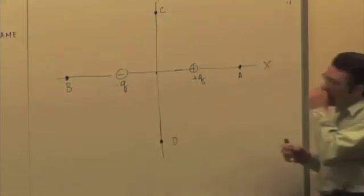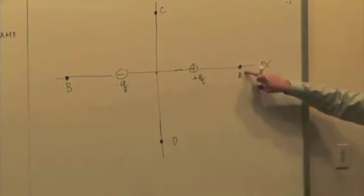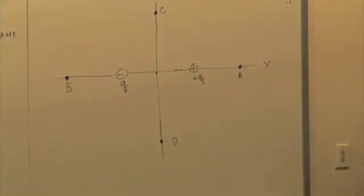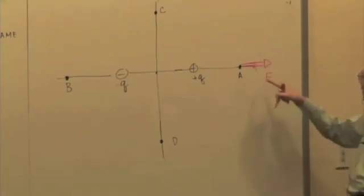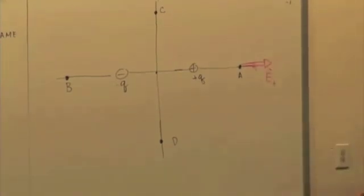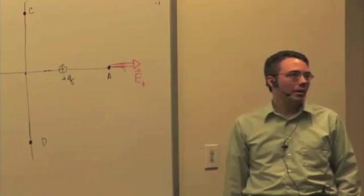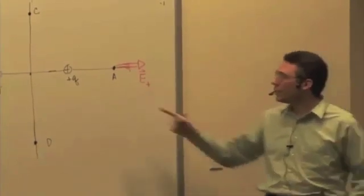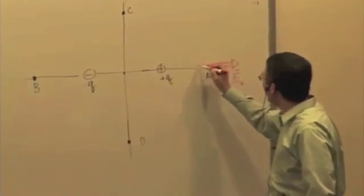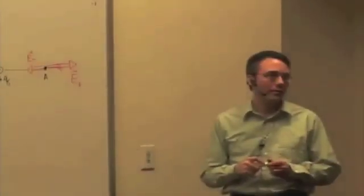So location A. I ignore the negative charge for right now and just think about the direction of the field due to the positive charge. That's pointing to the right. I'll call that E sub plus to indicate the electric field due to the positive charge. What about the field due to the negative charge? That's pointing the opposite direction. How do the magnitudes compare? E plus is bigger because it's closer. The positive charge is closer, so the field due to the negative charge farther away is smaller. When I add those two together, my net electric field points to the right.